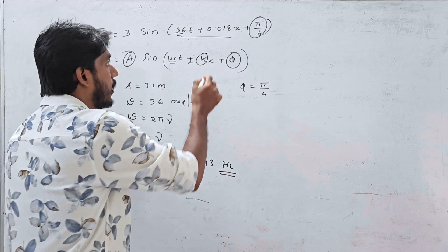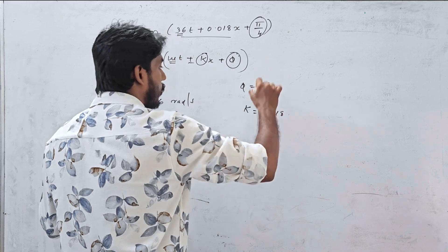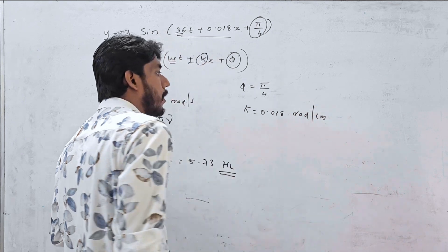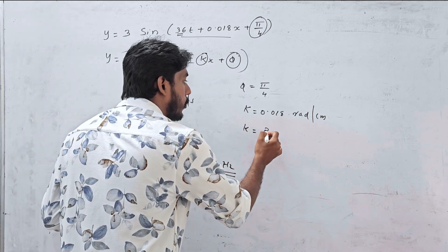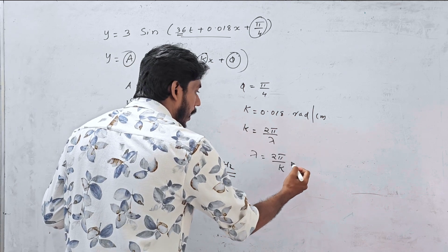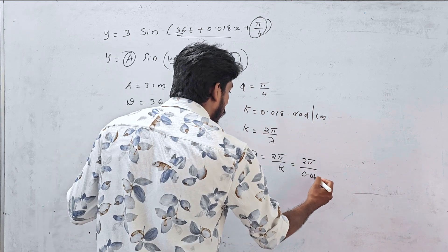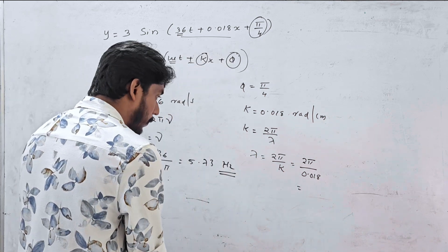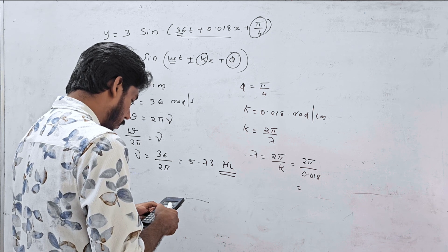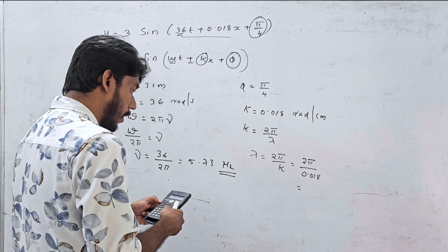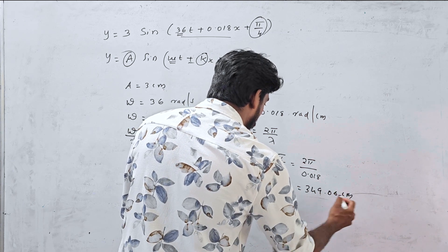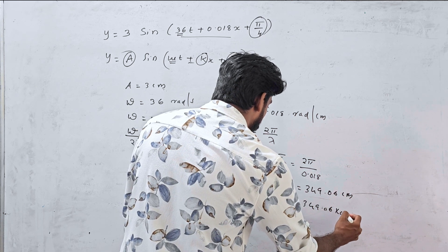k = 0.018 cm⁻¹. Since k = 2π/λ, we have λ = 2π/k = 2π/0.018. Calculating: 2 × 3.14159 divided by 0.018 gives λ ≈ 349.06 cm, or 349.06×10⁻² meters.